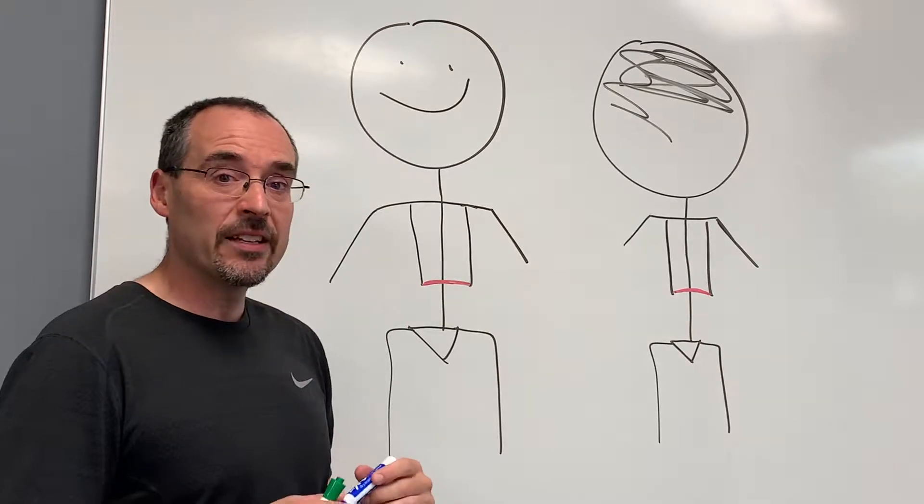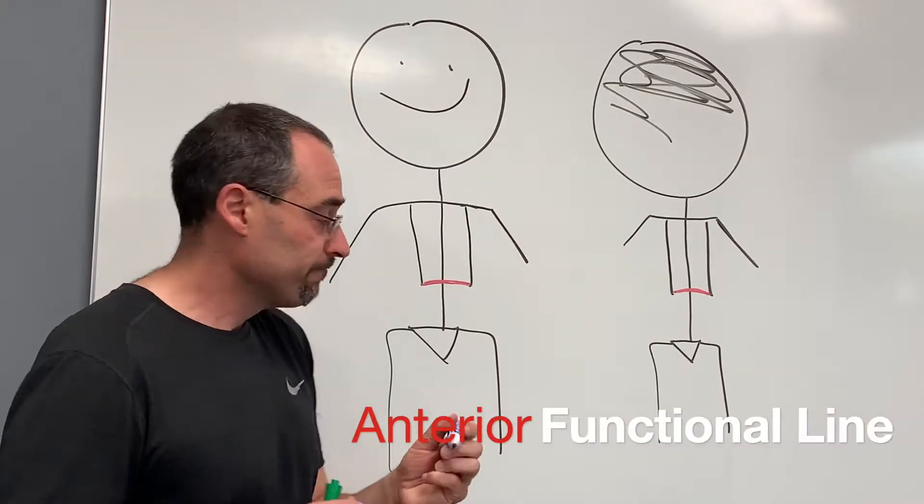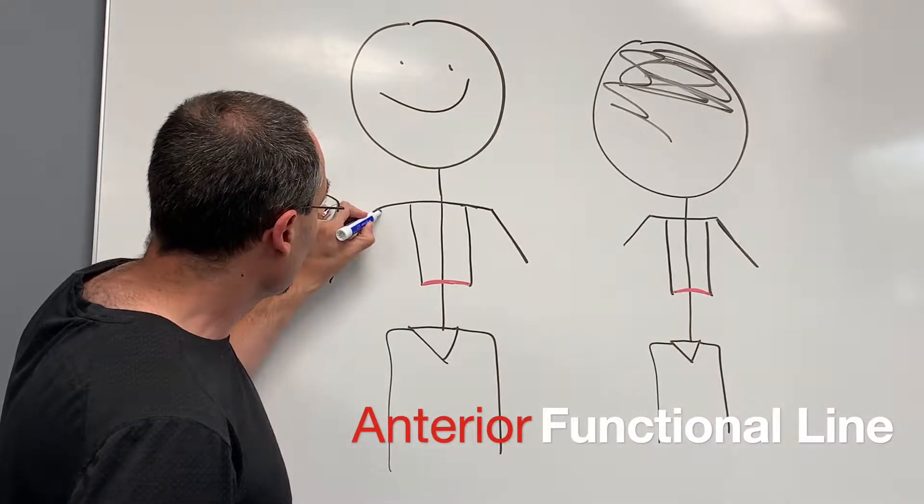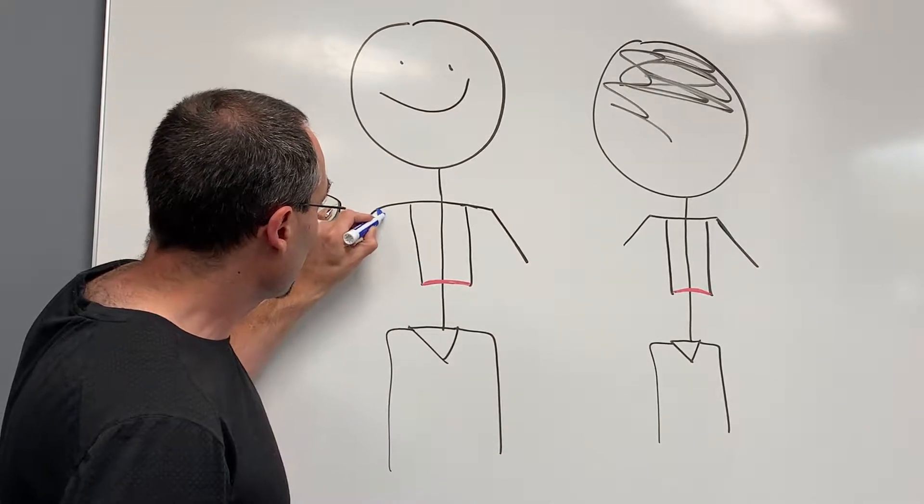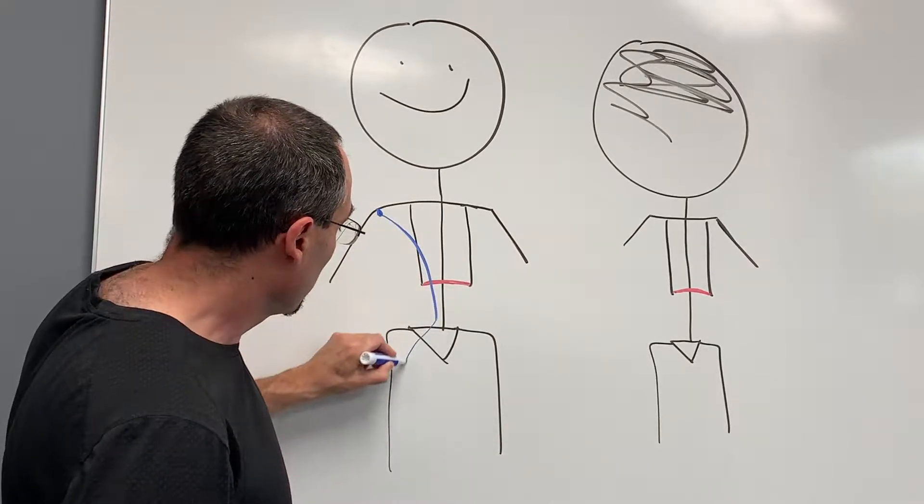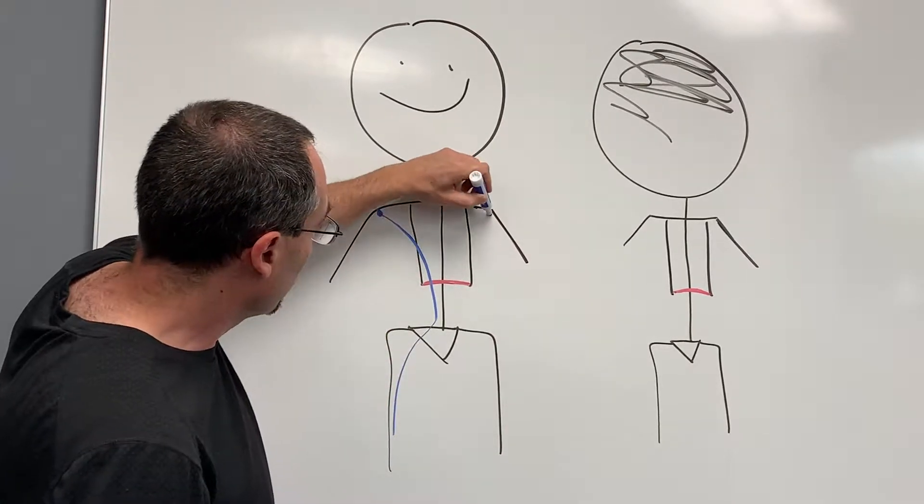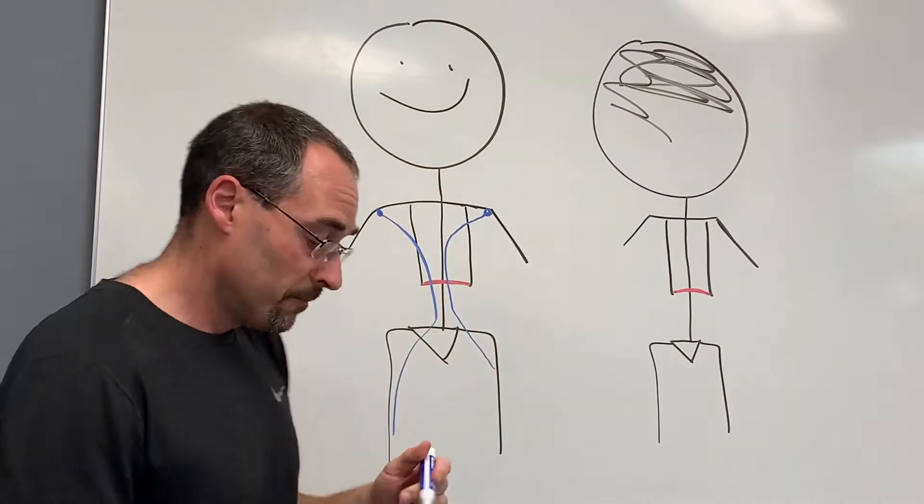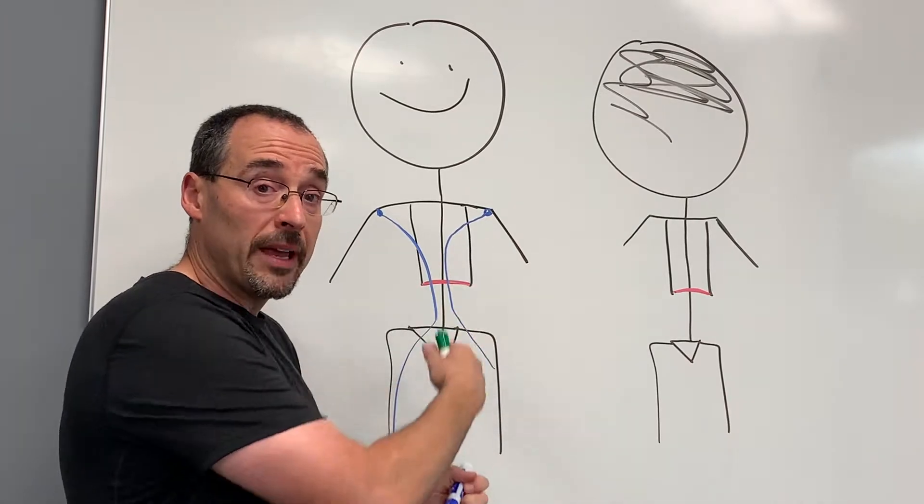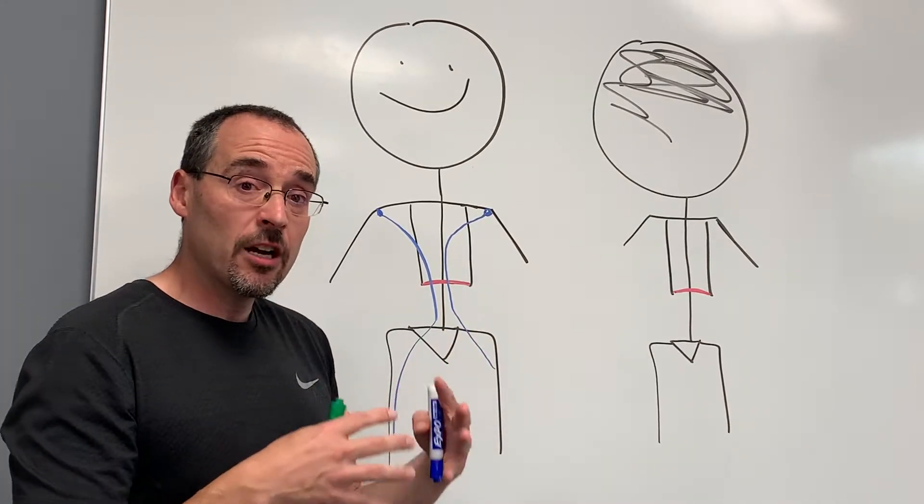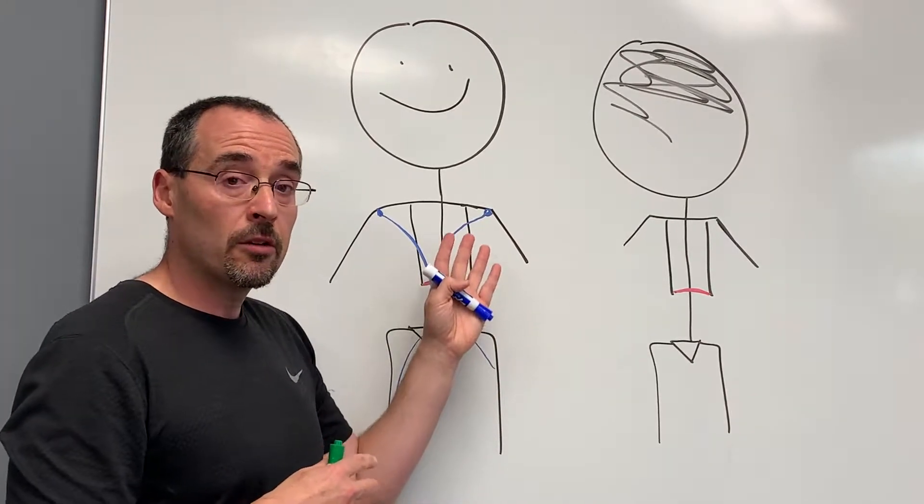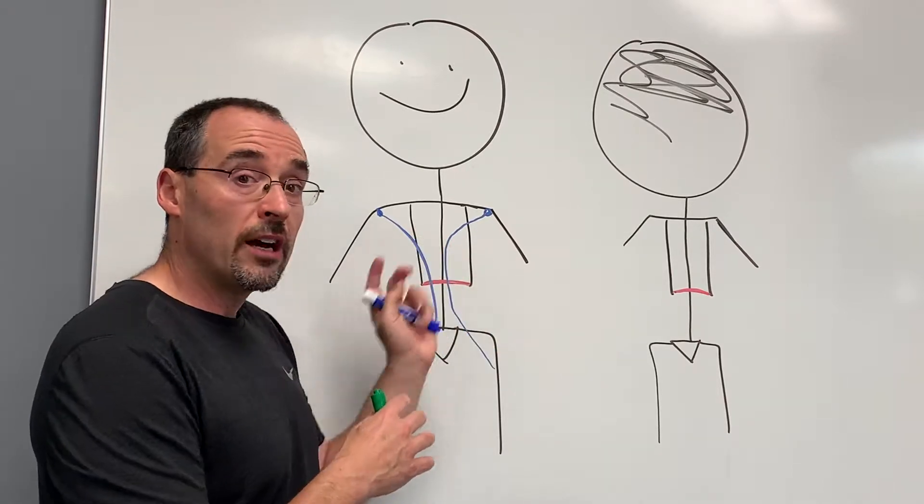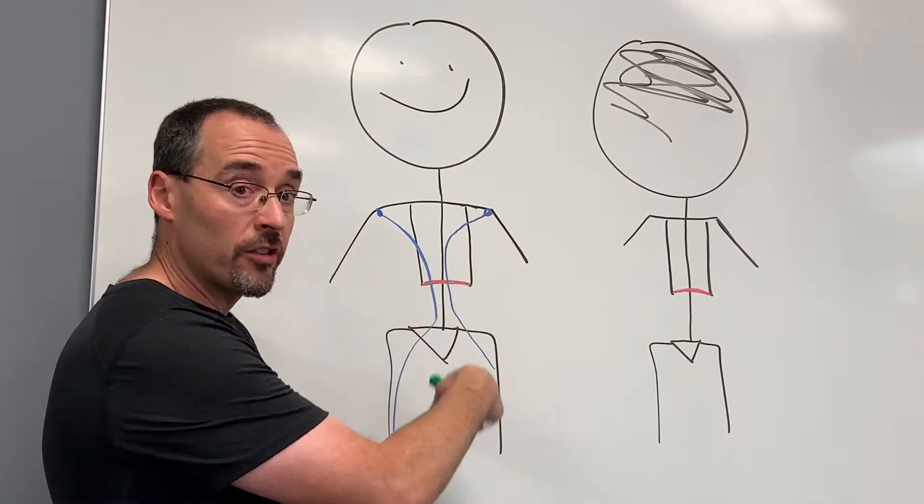So the first one is the anterior functional line, and it starts here, comes down here, and then it's on this side, goes down there. These are the fascial bands that interdigitate and cover these particular muscles and joints to allow for a movement pattern along this line.